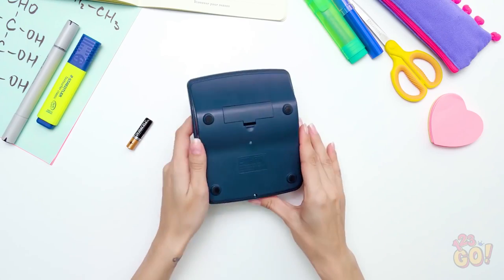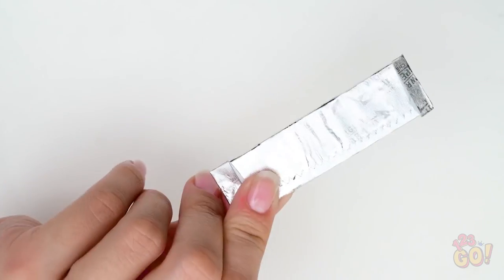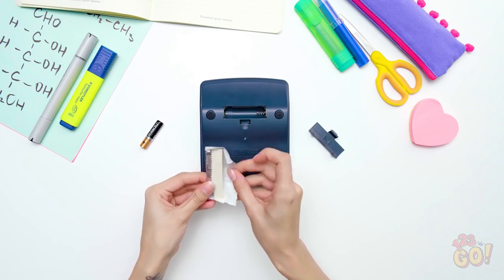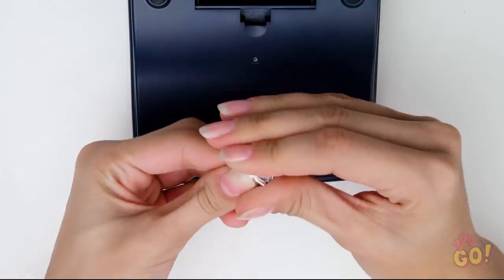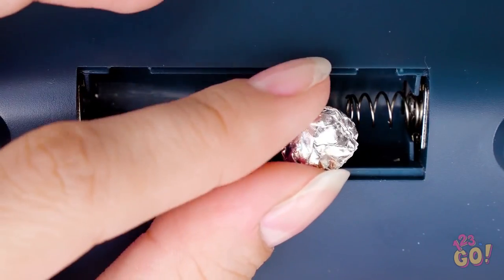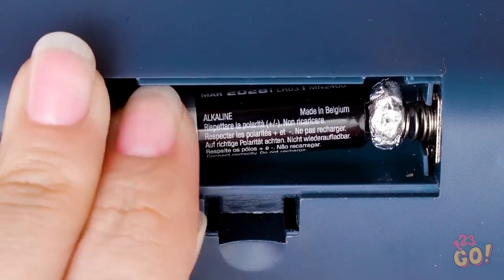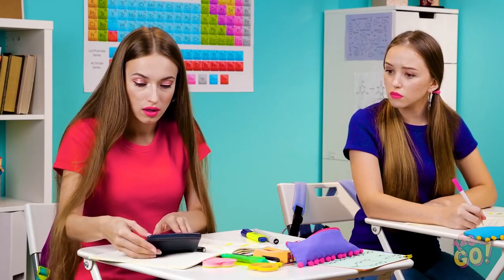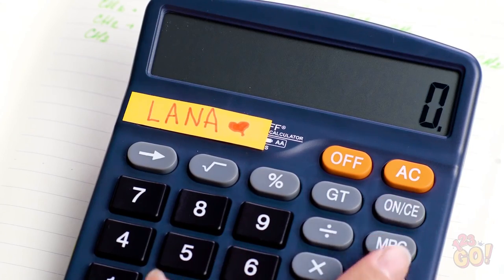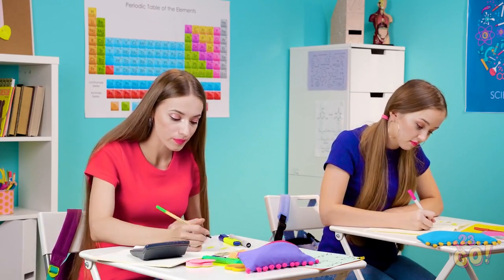If you find yourself in a battery jam like Lana here, all hope is not lost. Simply take a foil gum wrapper like this one and crumple it up into a ball. And make sure the foil part is facing the outside. Put the wrapper against the metal coil like this. Now stick the battery against the foil as if it were the regular coil. Here comes the moment of truth! Yes! We have power, people! Phew! I was pretty worried for a minute there. Who knew my piece of gum would save the day?